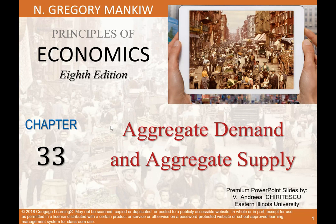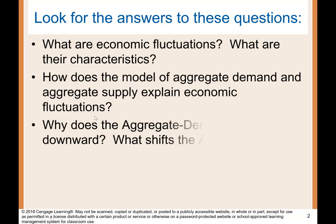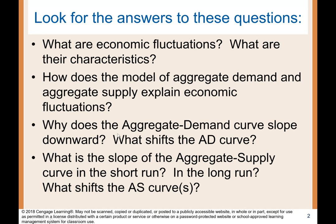Most economists use the aggregate demand and aggregate supply model to analyze short-term fluctuations. This chapter introduces the two pieces of this model and will answer the following questions: What are economic fluctuations and their characteristics? How does the model of aggregate demand and aggregate supply explain economic fluctuations, and why does the aggregate demand curve slope downwards?